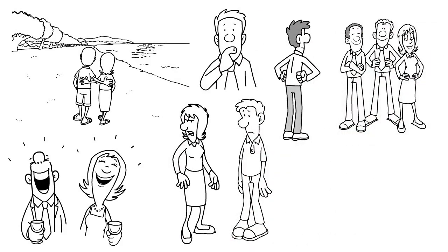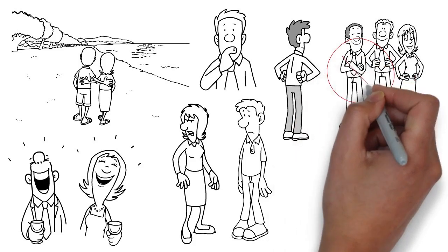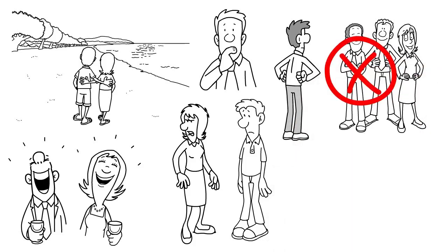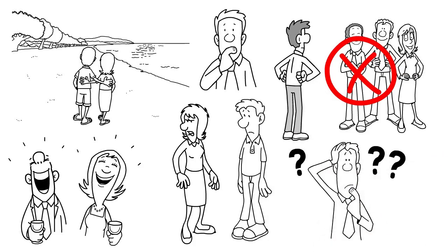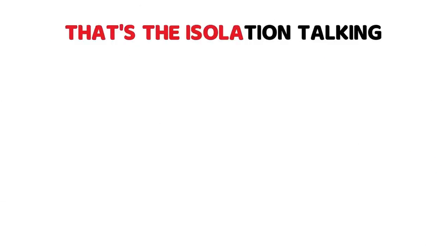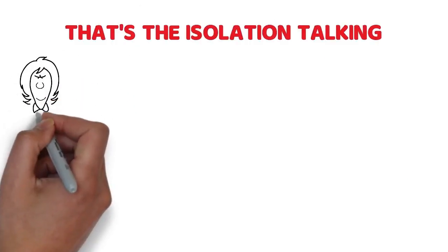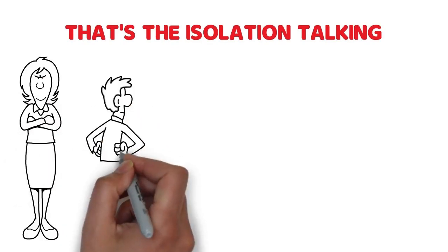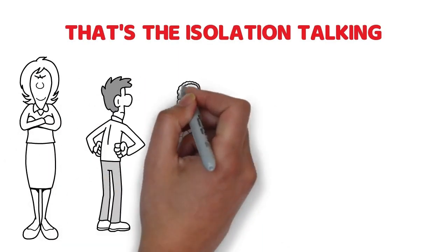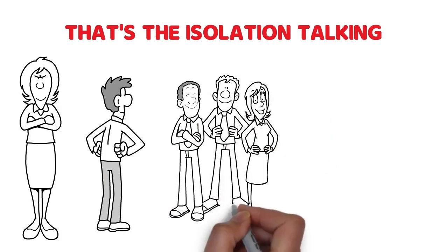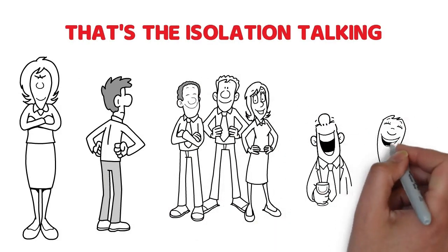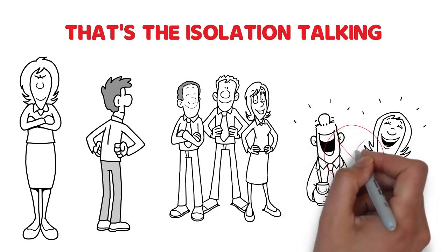Now, here's the kicker. This loneliness isn't just about missing your friends or family. It digs deeper, messing with your head and making you question if maybe you're the problem. That's the isolation talking, and it's a favorite trick in the narcissistic playbook. Your narcissistic wife is good at this game, making you feel alone even in a crowded room because the connections that matter, the ones that nourish your soul, have been chipped away.